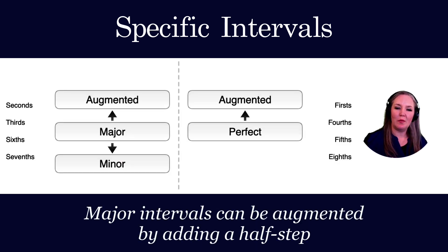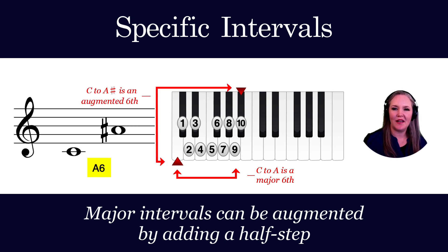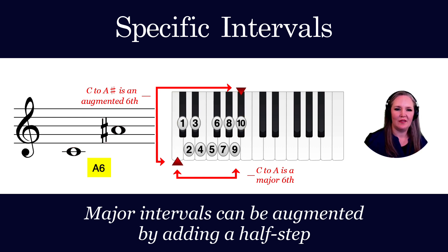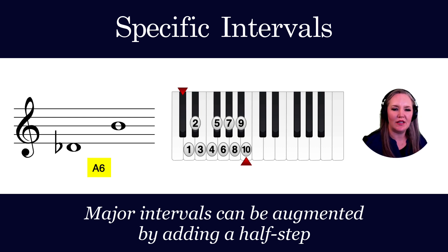Major intervals can also be augmented by adding a half step. For example, since C to A is a major sixth — nine half steps — C to A-sharp is an augmented sixth with ten half steps. D-flat to B is also an augmented sixth, since D-flat to B-flat is a major sixth.